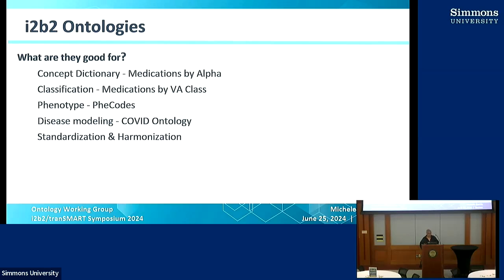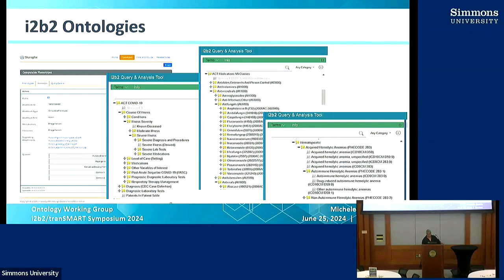We also use ontologies for standardization and harmonization. Like in the ENACT Shrine Ontology — those are examples of those. The standardization and harmonization of concepts makes it easy for things like our Shrine plugin to share phenotypes and concept sets, because we are all standardized on these i2b2 ontologies.